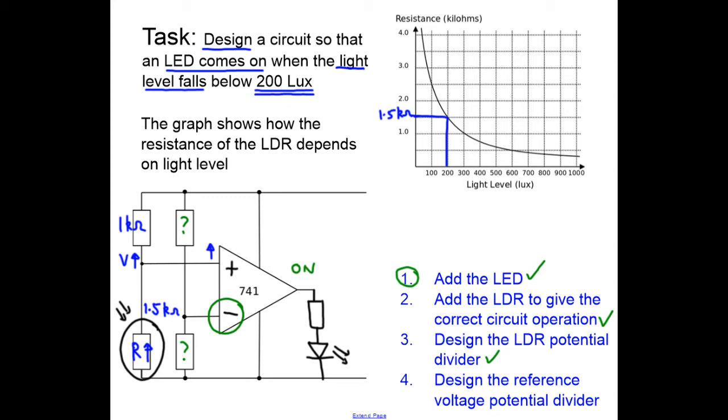I need to choose a value for this resistor and the value for this resistor. This is the crucial part: these voltages here and here at the two inputs, for inverting and non-inverting inputs, V+ and V-, must be equal to each other at the point where the LED comes on.